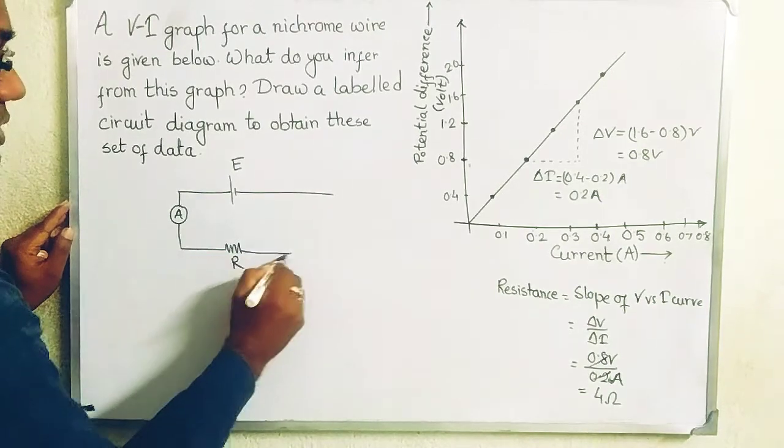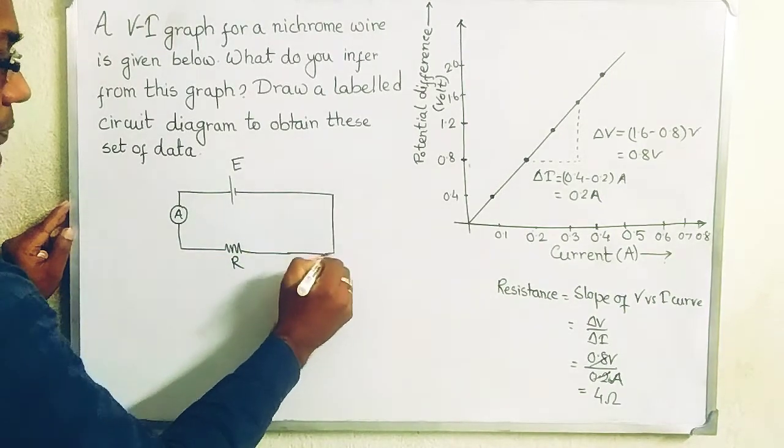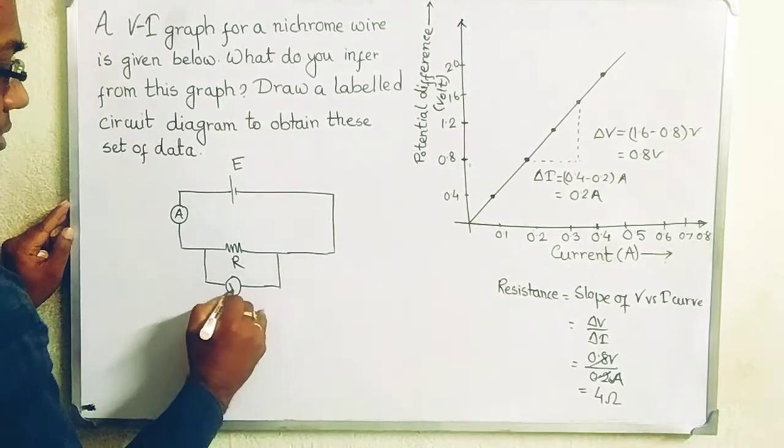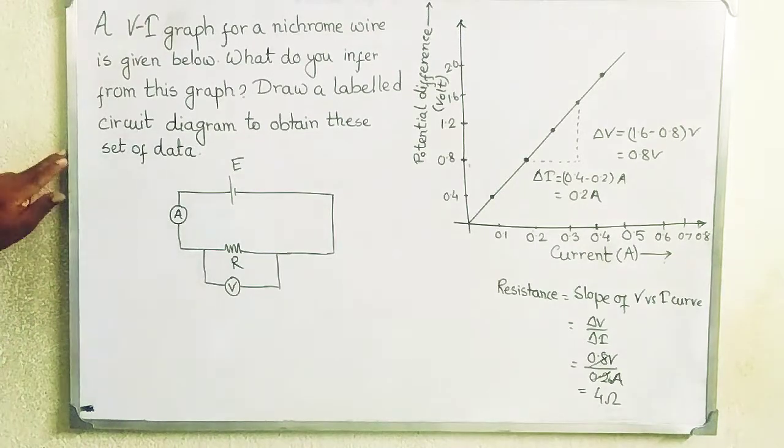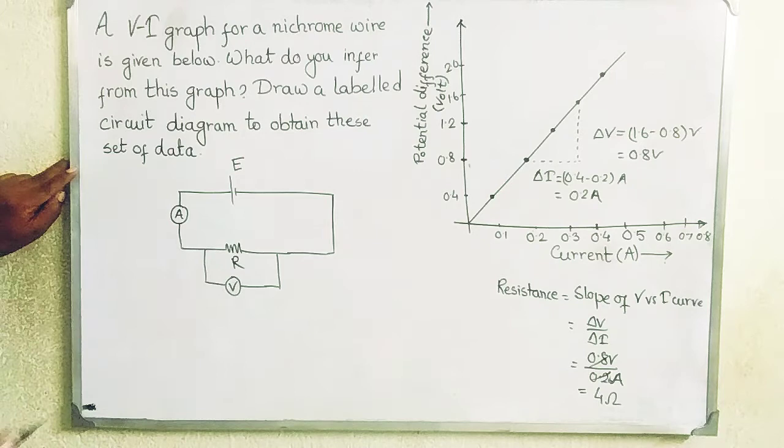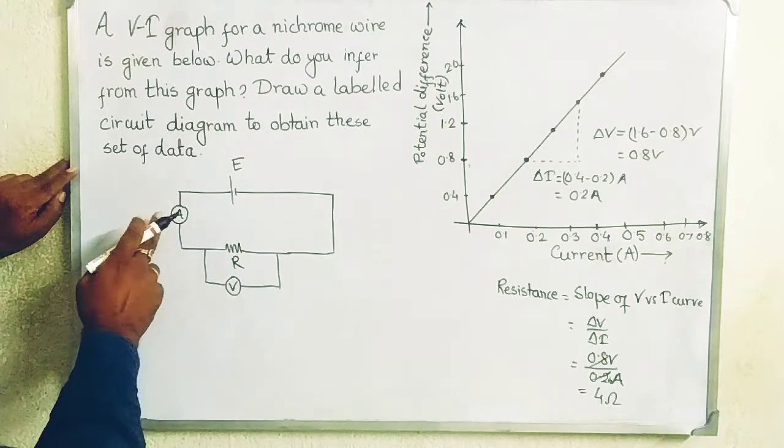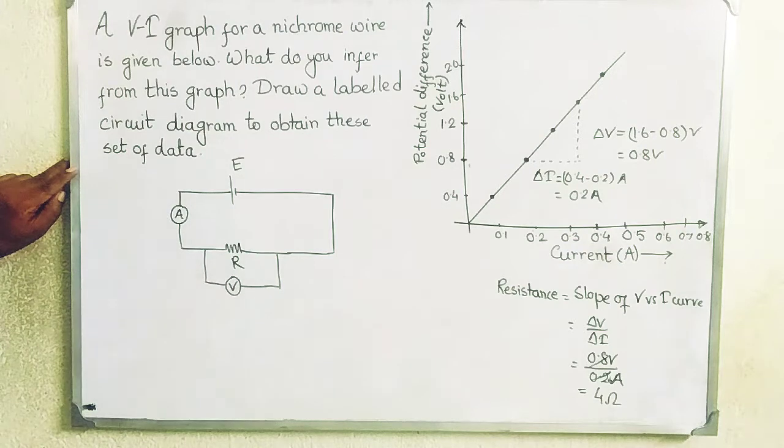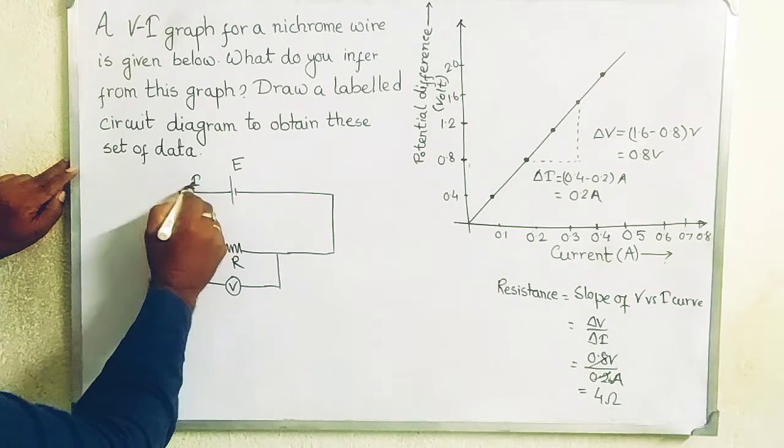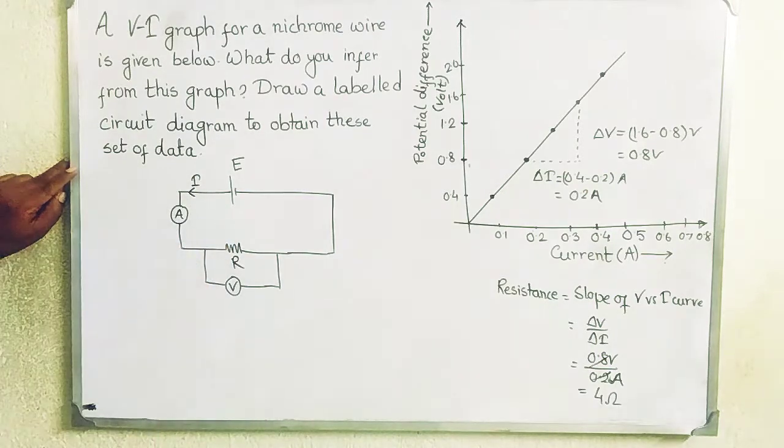The voltmeter is here. The voltmeter is connected parallel to that of resistance so you can calculate the potential difference across this. And the ammeter is connected in series with the resistance, so that if the current capital I is flowing through it, we can measure it.